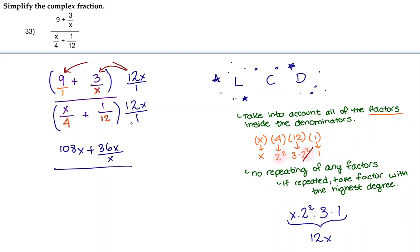Now in the denominator, 12x over 1 times x over 4 is going to give us 12x squared over 4. And now 12x over 1 times 1 over 12 is going to give us 12x over 12.